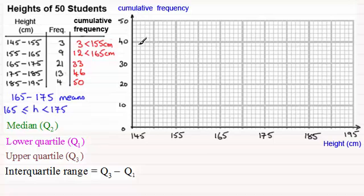And we now plot the points on the graph. We take the cumulative frequency and we plot it against the upper bound for each of these classes. So for this first one we take 3 and we plot it at 155. So we go to 155 and go up 3 units. So each one of these small squares stands for 2. So 3 will be just about there.